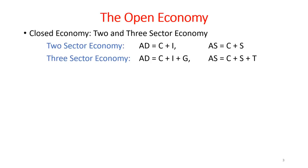Where C is for consumption expenditures, I for investment expenditures, S for savings, G for government expenditures, and T is for taxes.